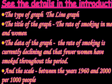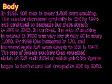In the body, you have to explain what you see in the graph. For example: 'In 1960, 600 men in every thousand were smoking. This number decreased gradually to 500 by 1974 and continued to decrease more steeply to 250 in 2000. In contrast, the rate of smoking in women in 1960 was very low at only 80 in every thousand. By 1968 this increased to 170.' That way, you explain what you see. If the data is large, take the highest, lowest, and middle values.